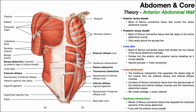Looking at this picture, we can see the rectus abdominis muscle. There's no pyramidalis shown, but it would be way down at the bottom — a really small muscle. On the left, you see the individual segments of the left half of the rectus abdominis muscle, separated by these tendinous intersections. On the right side, the rectus abdominis is covered by a fibrous connective tissue layer: the anterior rectus sheath.